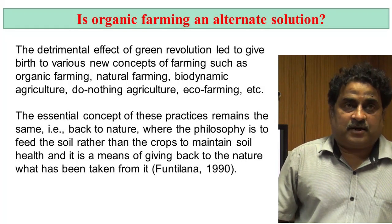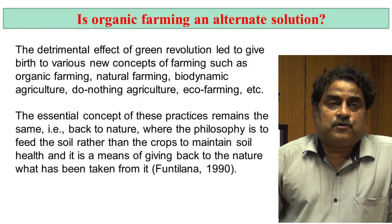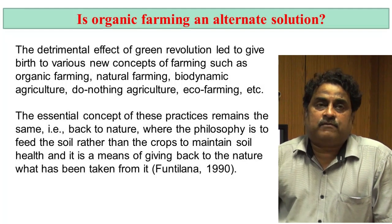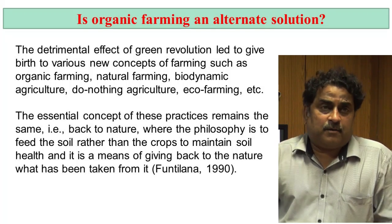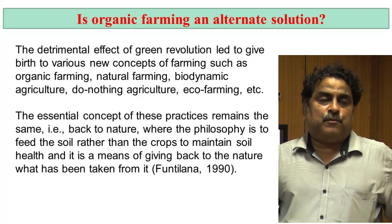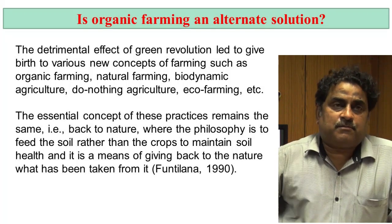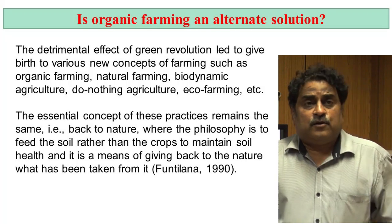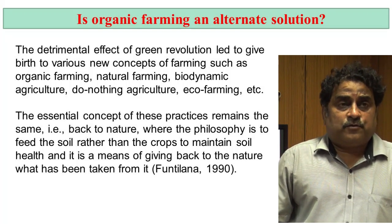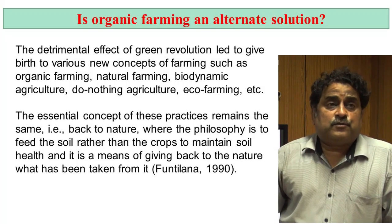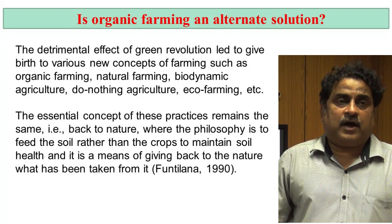In chemical farming, we observe deficiency symptoms in plants — yellowing of lower leaves indicates nitrogen deficiency, yellowing of upper leaves indicates sulfur deficiency, blue color on leaves indicates phosphorus deficiency due to immobilization of carbohydrates, and necrotic symptoms on upper leaves indicate potassium deficiency. Based on these symptoms, we apply different nutrients. But in organic farming, we feed the soil and the soil will feed the plant. We should take care of the soil and the soil will take care of the plant.